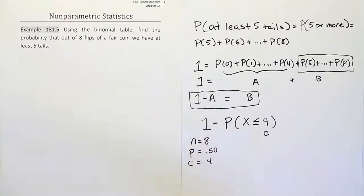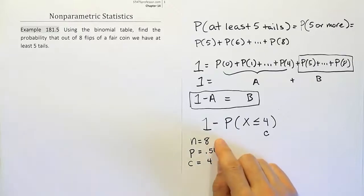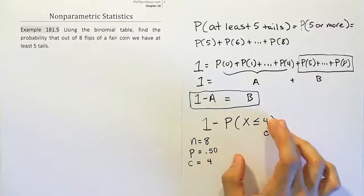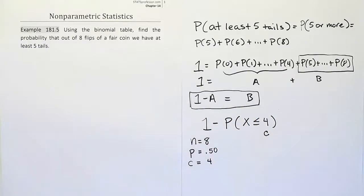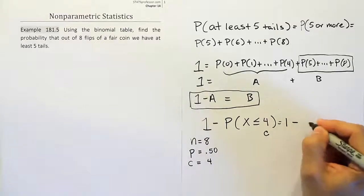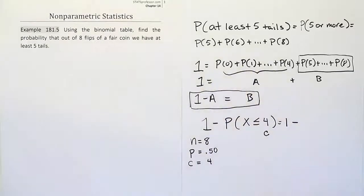All right. So let's go to our table and look up these quantities now. We're going to look up 0.5, n is 8, and c is 4. And that's going to give us this probability. When we come back, we'll subtract that result from one. Okay. So one minus whatever we get from the table. Let's go to the table now and look that up.